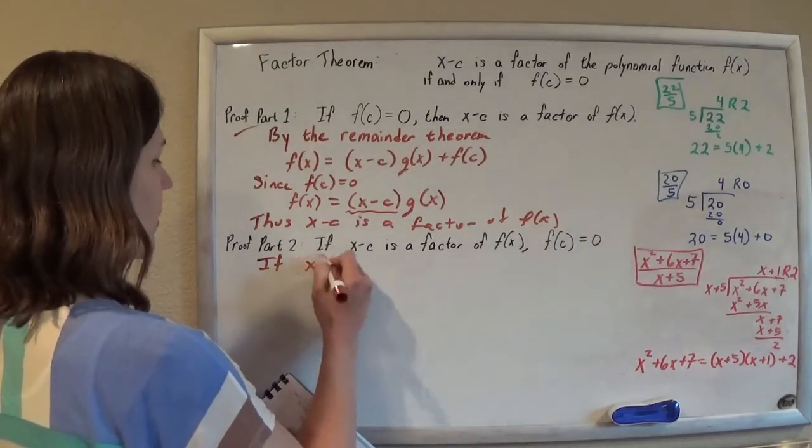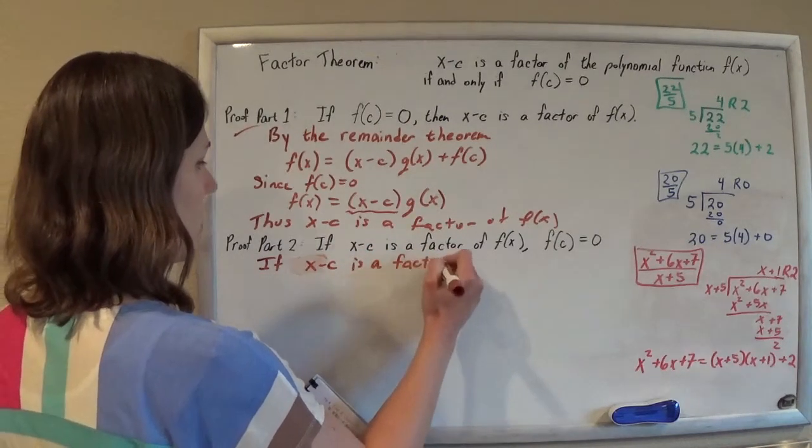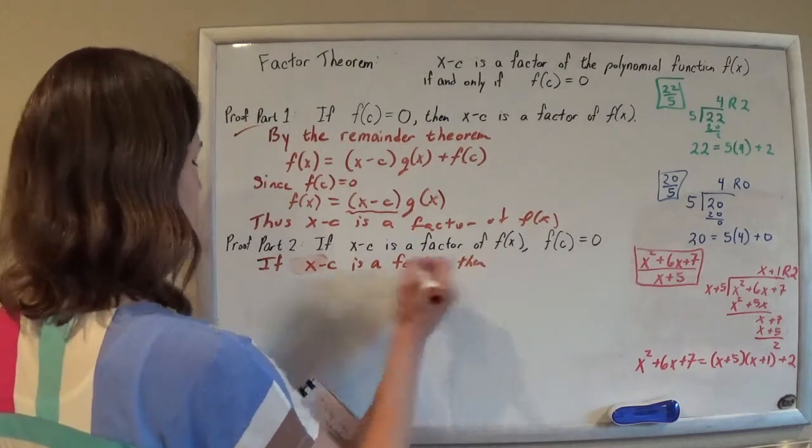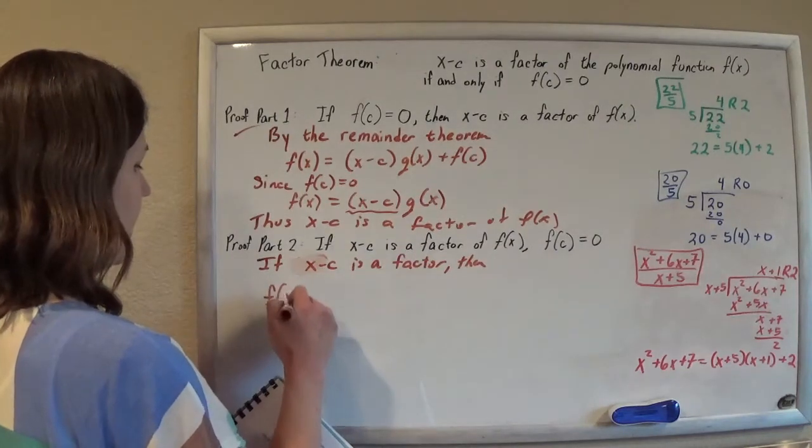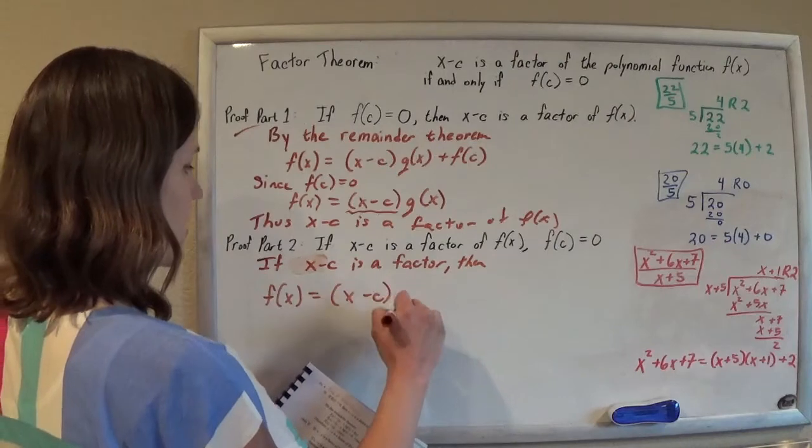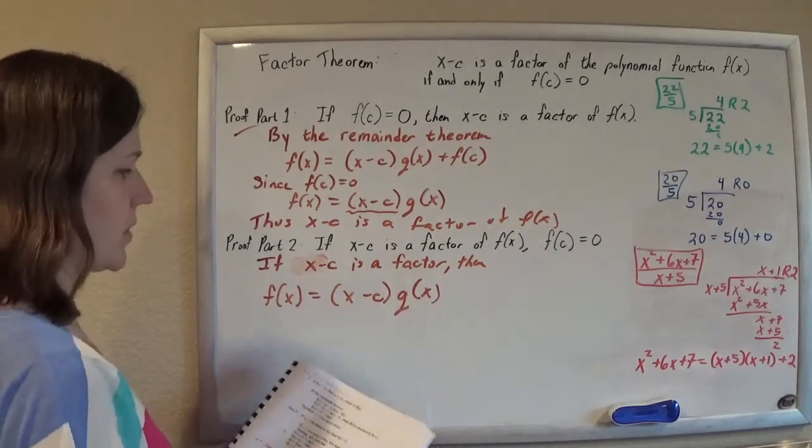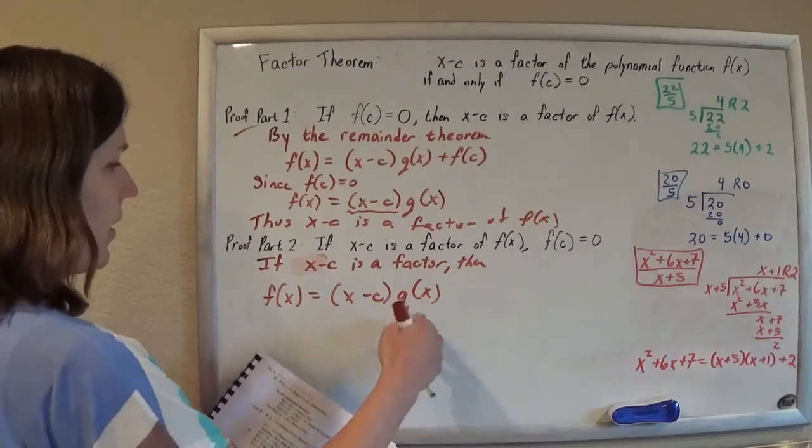So if we're given that x minus c is a factor, then we can write that f of x should be x minus c times some quotient times some extra function with no remainder, right?